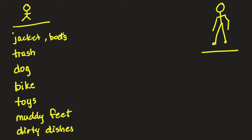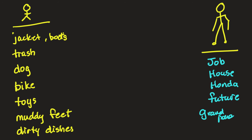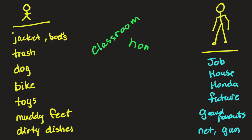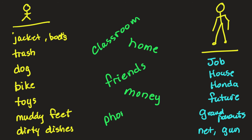For our older students, we're talking about things like a job, taking care of your house, taking care of your Honda, taking care of your future, taking care of your grandparents, or taking care of your fishnet or your guns. If you're not responsible, what does that look like? And there are some things for all of us to talk about — like what does it look like in your classroom or your home if you're not responsible? What does it look like with your friends, your money, or your phone?